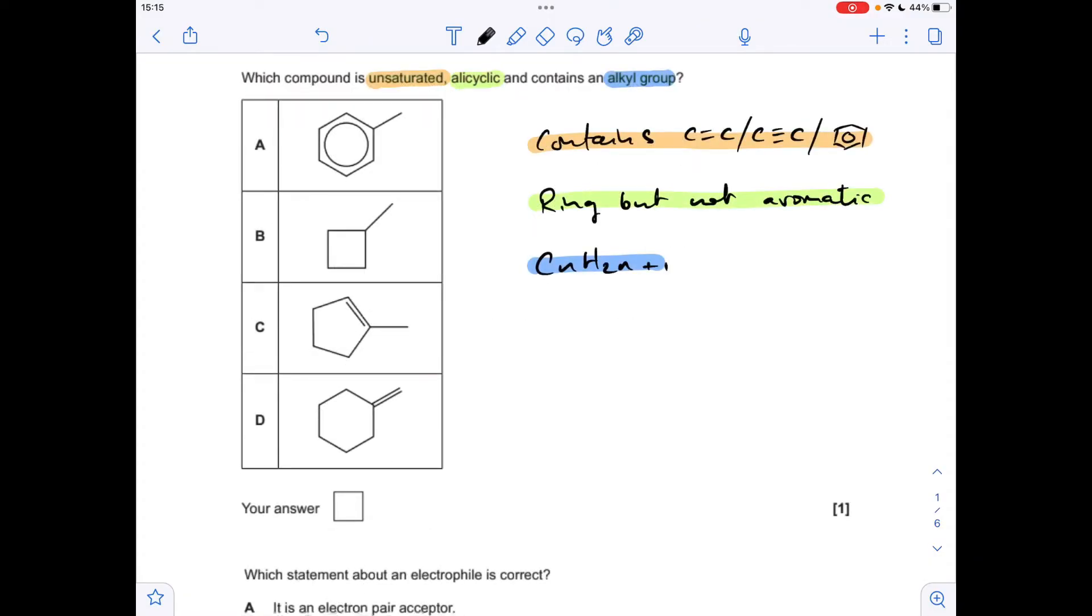Moving on to the next part, you'll see I've put all the information up for those three key terms. Unsaturated means the substance contains a carbon-carbon double, carbon-carbon triple, or a benzene ring. An allacyclic compound is a ring but it's not an aromatic ring so it can't contain benzene. And the alkyl group has the general formula CnH2n+1. So which one satisfies all of that?